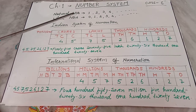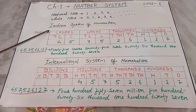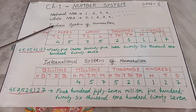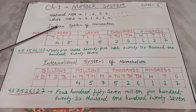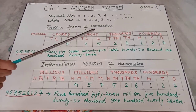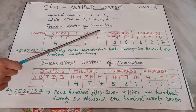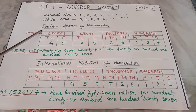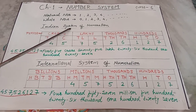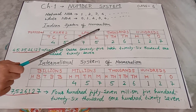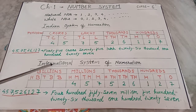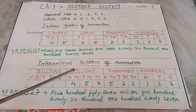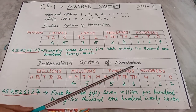For writing large numbers in words, there are two systems of numeration: the first one is the Indian system of numeration and the other is the international system of numeration.